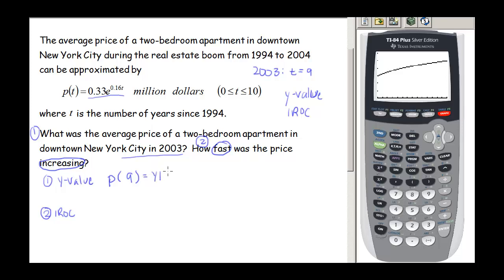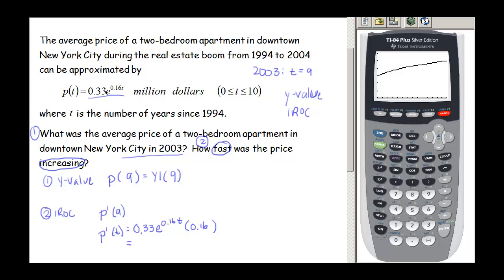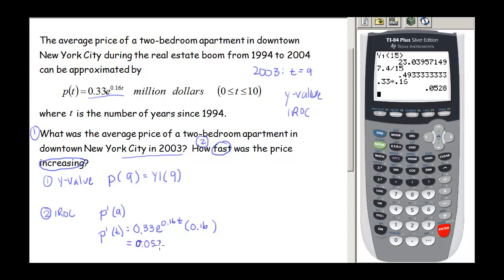We'll put P into Y1 and find Y1 of 9. For the second question we need P prime of t, so let's take the derivative. The derivative of e to the 0.16t brings down the 0.16 by the chain rule, and the 0.33 coefficient stays. So P prime of t equals 0.33 times 0.16 times e to the 0.16t, which simplifies to 0.0528 e to the 0.16t.